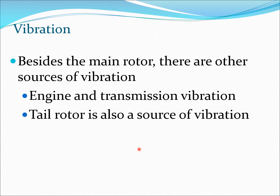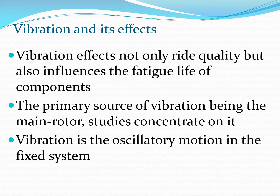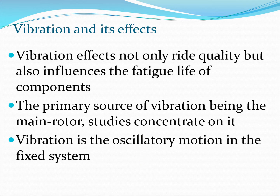Besides the main rotor, which is the primary source of vibration, there are additional sources. You can get vibration from the engine and the transmission system — for example, a gas turbine engine with complex gear mechanisms. The tail rotor is also likely to cause vibration since it is another rotating mechanical system. Vibration not only impacts ride quality but also the fatigue life of components. Most literature concentrates on reducing vibration from the main rotor, which transmits oscillatory motion in the fixed system to the fuselage.